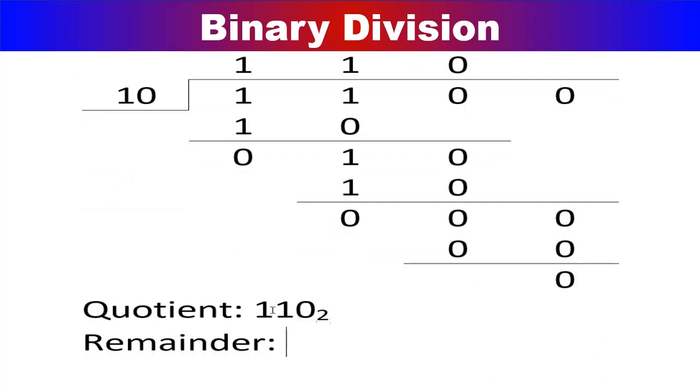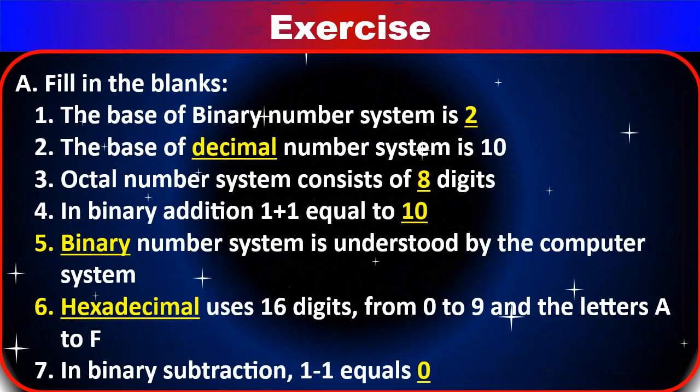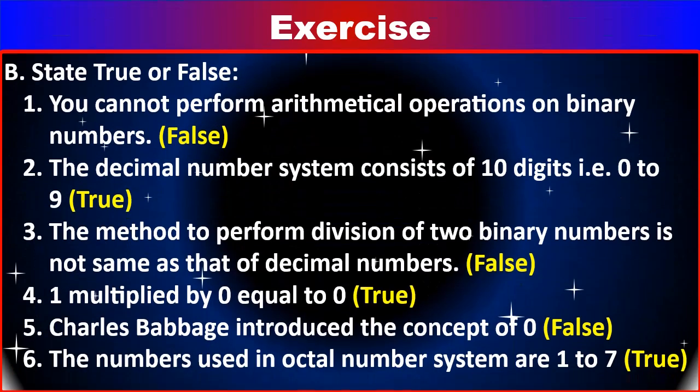Exercise A — Fill in the blanks: (1) The base of the binary number system is 2. (2) The base of the decimal number system is 10. (3) Octal number system consists of 8 digits. (4) In binary addition, 1 + 1 = 10. (5) Binary number system is understood by the computer system. (6) Hexadecimal uses 16 digits from 0 to 9 and the letters A to F. (7) In binary subtraction, 1 − 1 = 0.